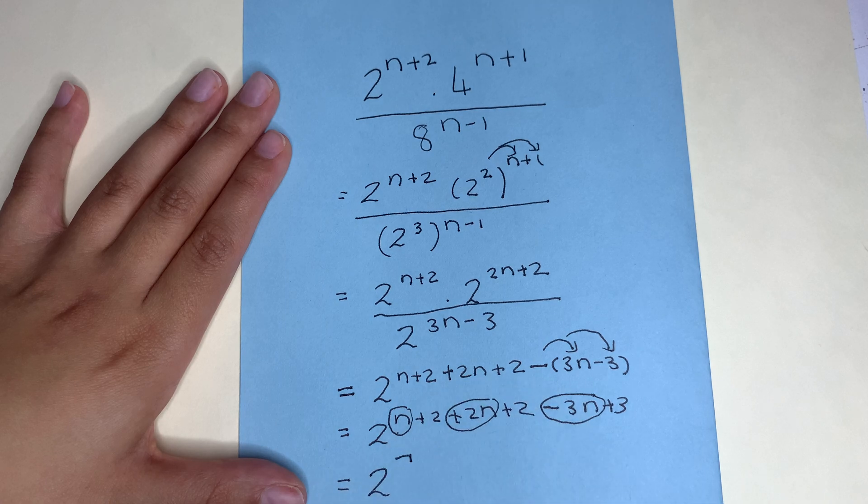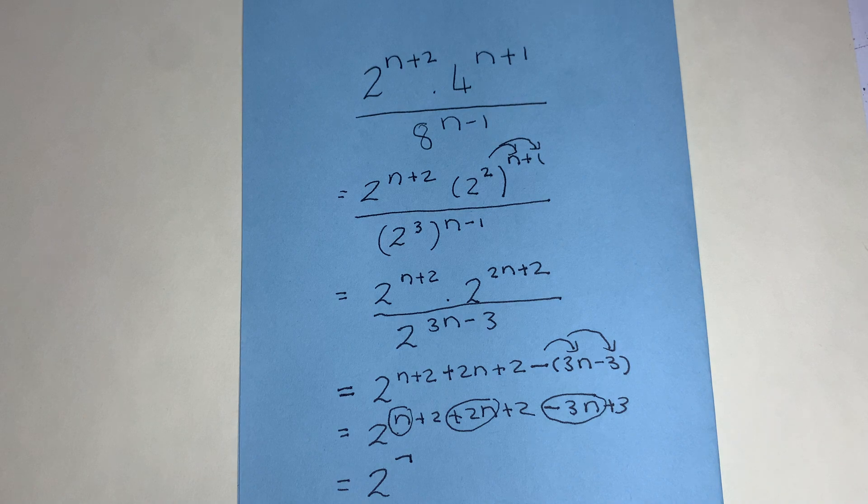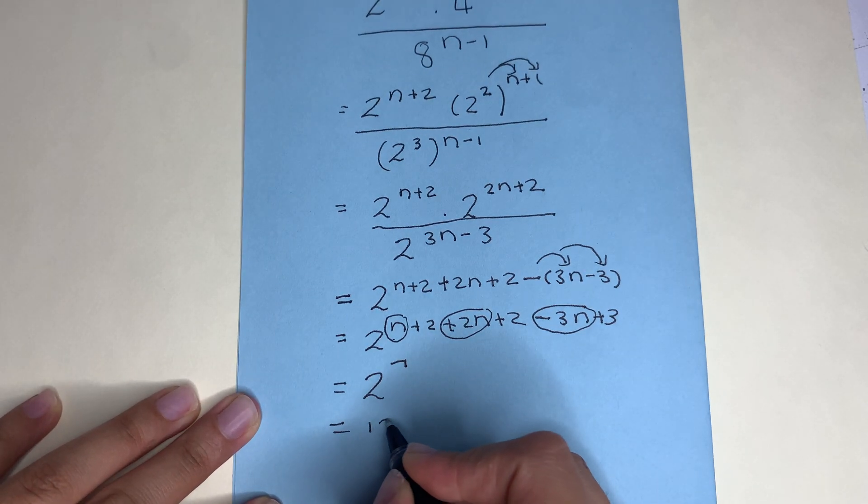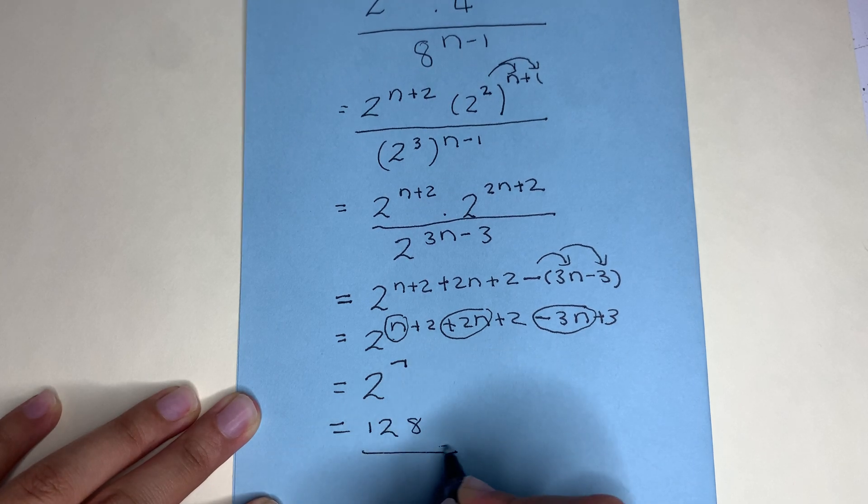So our answer is 2 to the power of 7. Now you're welcome to go and type this in on your calculator. 2 to the power of 7 gives us an answer of 128. There we go. 128.